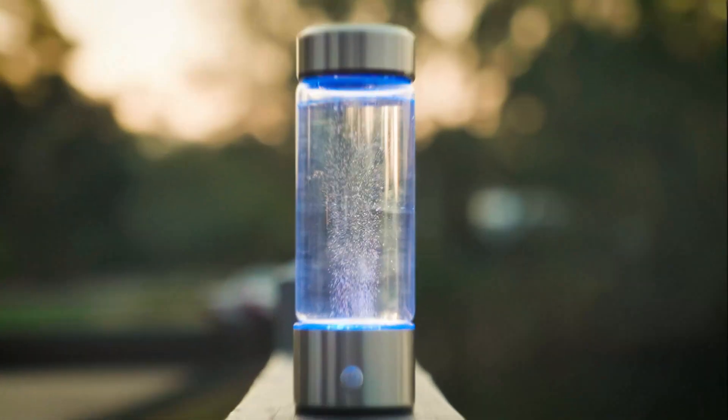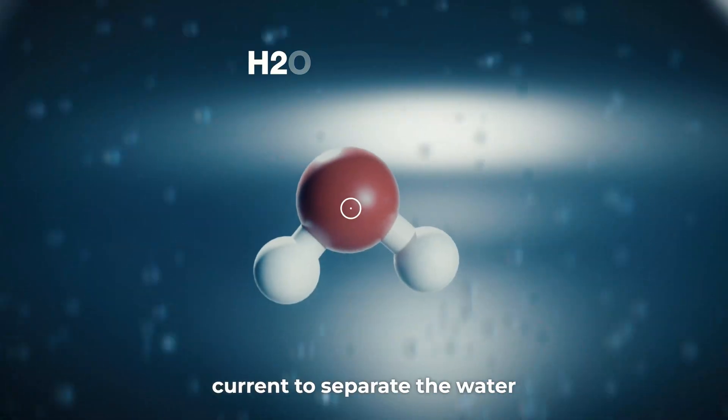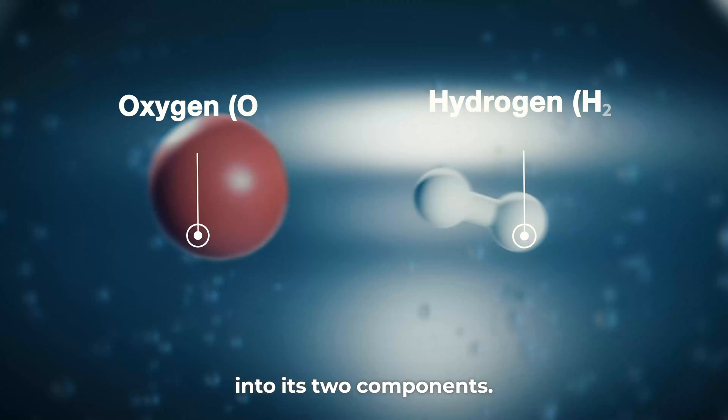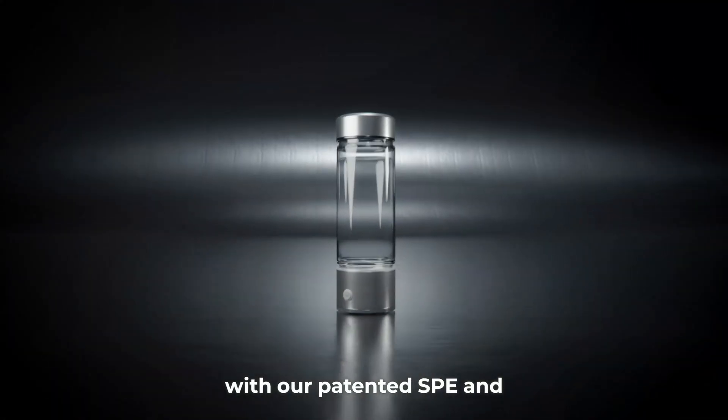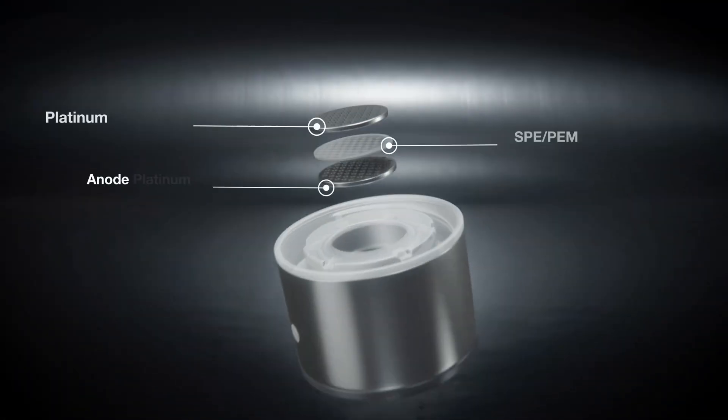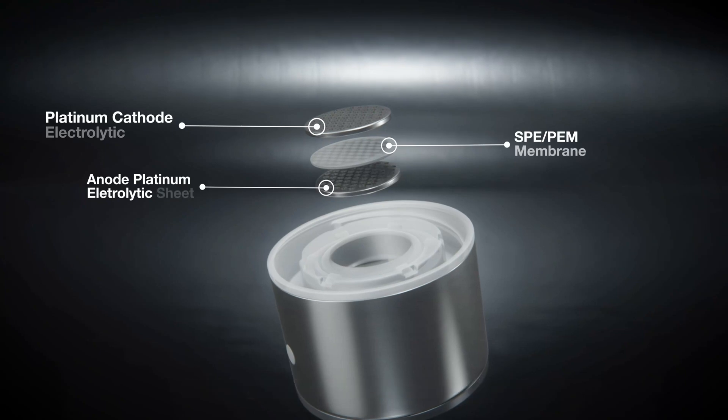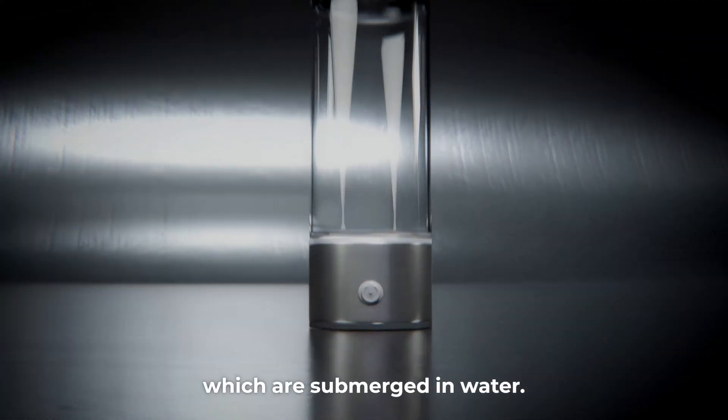So how does the Hydro Lab work? The Hydro Lab uses an electrical current to separate the water into its two components. This process is performed with our patented SPE and PEM technology. The Hydro Lab contains electrodes made of platinum-coated titanium, which are submerged in water.